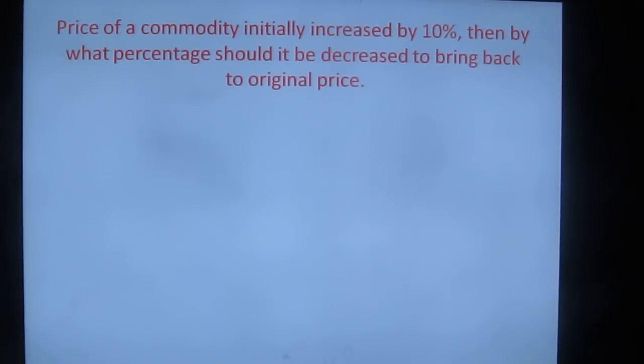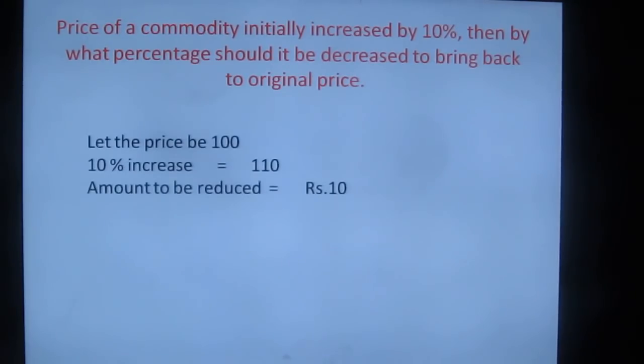Price of a commodity initially increased by 10%, then by what percentage should it be decreased to bring back to the original price? How to do this question? As I said earlier, let the original price be 100. Now if the price is increased by 10%, what is the final price? It will be 110. Please remember, when the price has become 110, you have to travel only with 110. Now if you decrease 10% from 110, it will become 99.